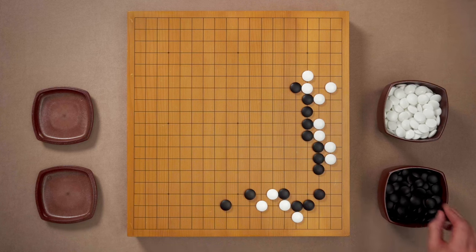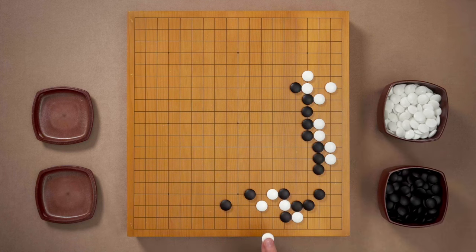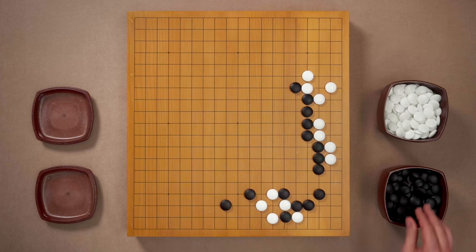But after white's tiger's mouth, black will play this atari. And how do you think? Where should white play next? The aim of the tiger's mouth is to start the ko. Don't play this connection and get an empty triangle. If you play this tiger's mouth, you get a good chance to make a very big life in black's area.